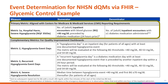Continuing with an example from glycemic control, we focus on calculations for the primary metric of that new DQM. As highlighted on the slide, the primary metric calculates the number of adult inpatient encounters where the patient was administered at least one hypoglycemic medication and suffered the harm of a severe hypoglycemic event, over the number of adult inpatient encounters where at least one hypoglycemic medication was administered. This slide also shares the complementary metrics for the new glycemic control DQM.